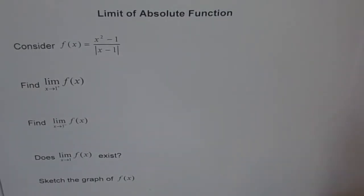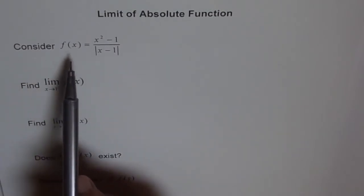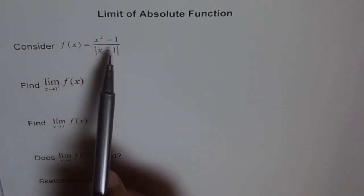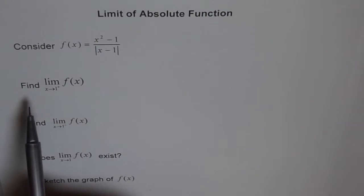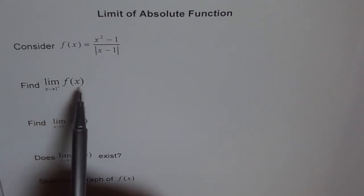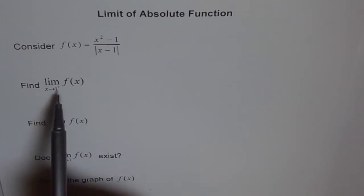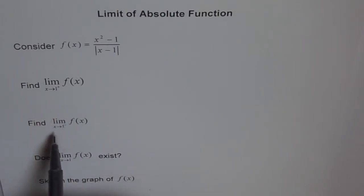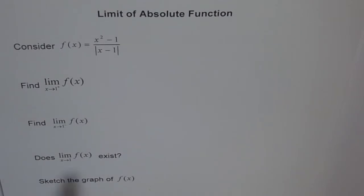Let's try to understand the limit of an absolute function. Consider the function f(x) = (x² - 1) / |x - 1|. We need to find the limit of this function when x approaches 1 from the positive side, when x approaches 1 from the negative side, and from these two results figure out whether the limit exists at x = 1. The last part is to sketch the graph of this function.